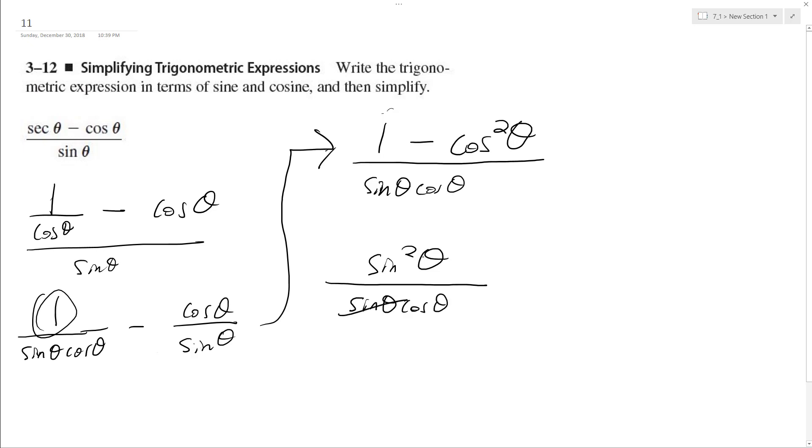So this sine theta on the bottom gets canceled out. This one here becomes a 1, so this ends up being sine theta over cosine theta, which is equal to tangent theta. That's it.